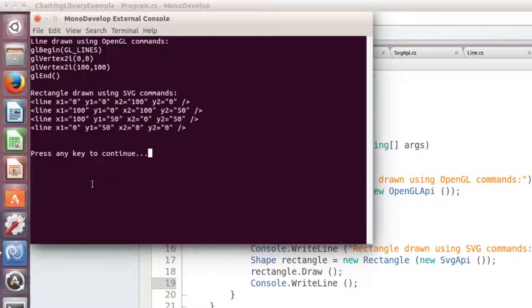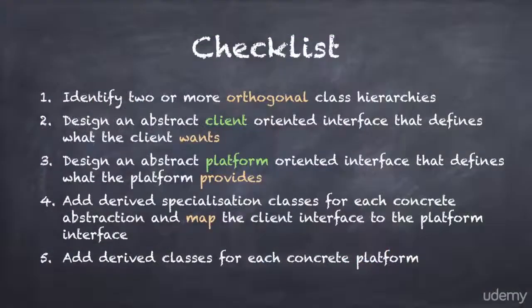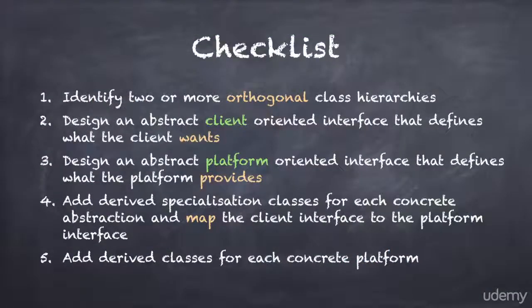Here is a quick checklist you can use to implement the bridge pattern. First, identify two or more orthogonal class hierarchies in your application.